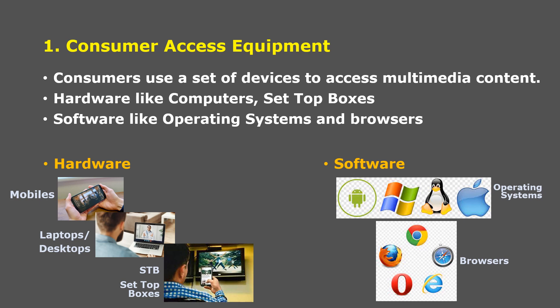Similarly, people make use of different types of software, which includes operating systems and browsers. In the case of mobile phones, Android or iOS; in the case of laptops or desktops, Windows or Linux. Different types of browsers include Mozilla Firefox, Google Chrome, Safari, Microsoft Internet Explorer or Edge, and Opera. In this way, consumers make use of different types of hardware and software to access multimedia content.